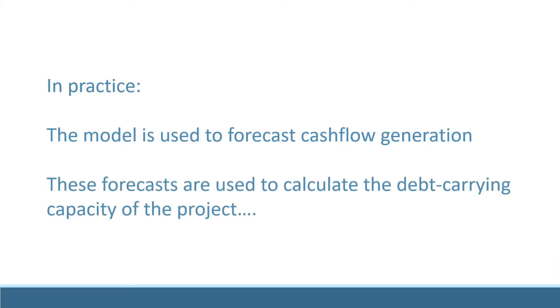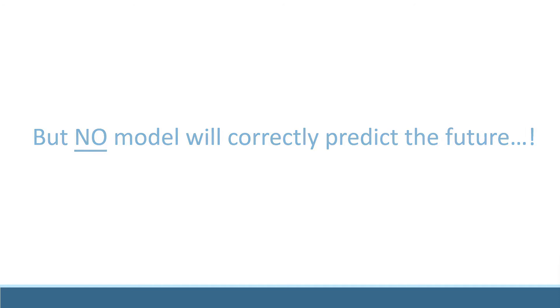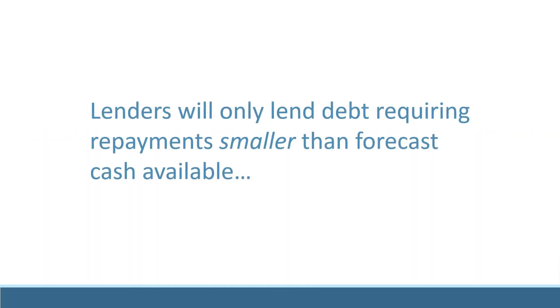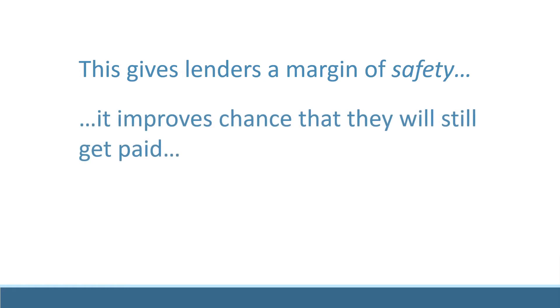Instead, the financial model uses the best forecasts available to calculate how much cash the project has to pay its lenders. But nobody can predict the future, so what lenders do is make sure that any payments due are always smaller than the cash available. By doing this, they provide themselves a margin of safety. This increases the chances that debt and interest will still be paid even when things do not go as well as planned.